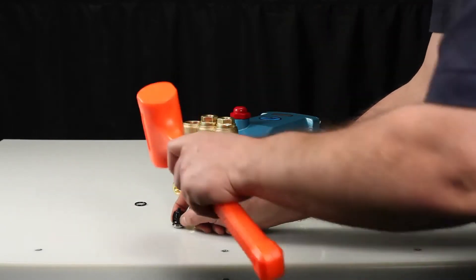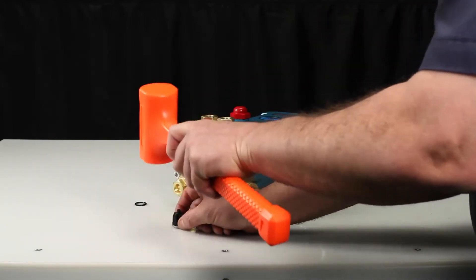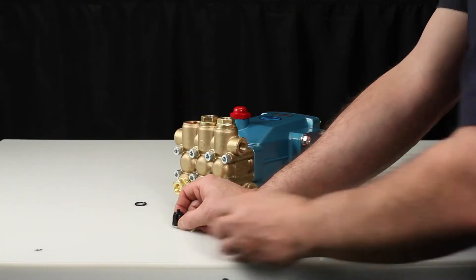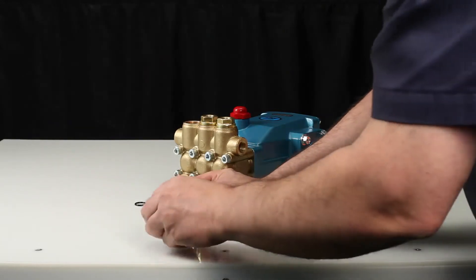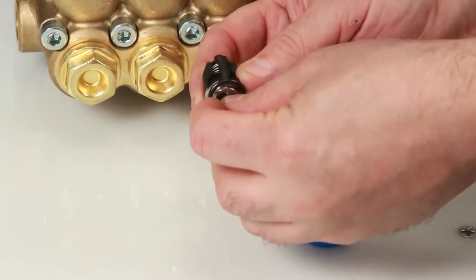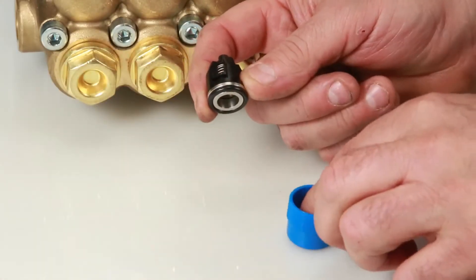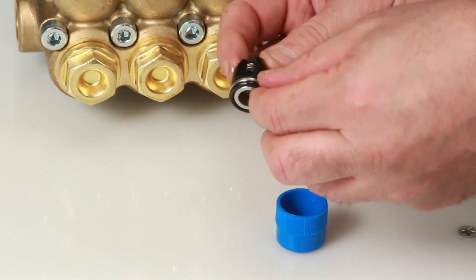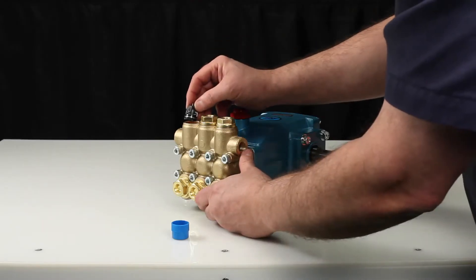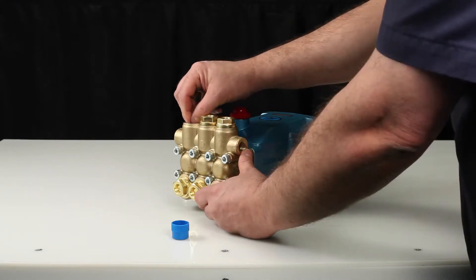Using a rubber hammer, lightly tap into place. Replace the O-ring and lubricate before installing assembly into manifold. Next, insert valve assembly into manifold and press into place.